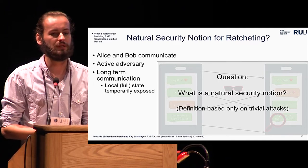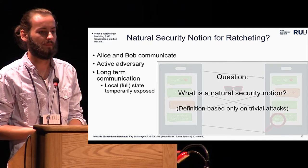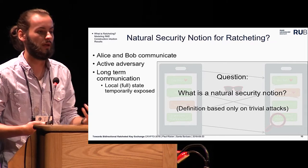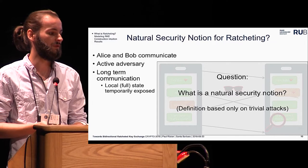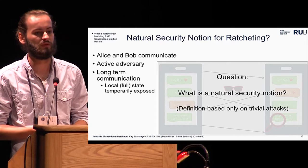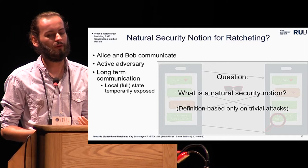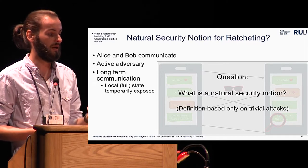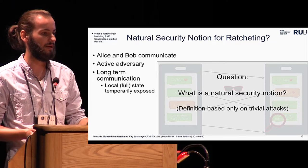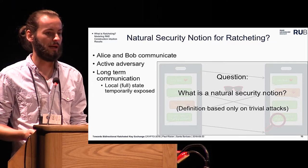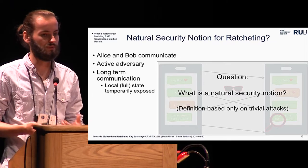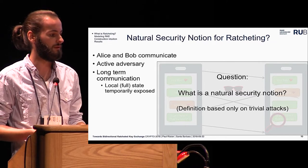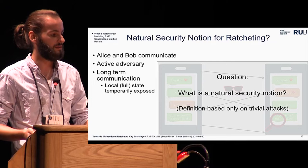The question we ask is whether this technique is sufficiently secure, or what the security of ratcheting actually means — and this is the question we answer in our paper. The natural security notion for ratcheting provides an adversary full control over the network, lets him adaptively and repeatedly expose the local states of Alice and Bob, and requires full security except in cases where we know the adversary can trivially break security. We call these the trivial attacks.